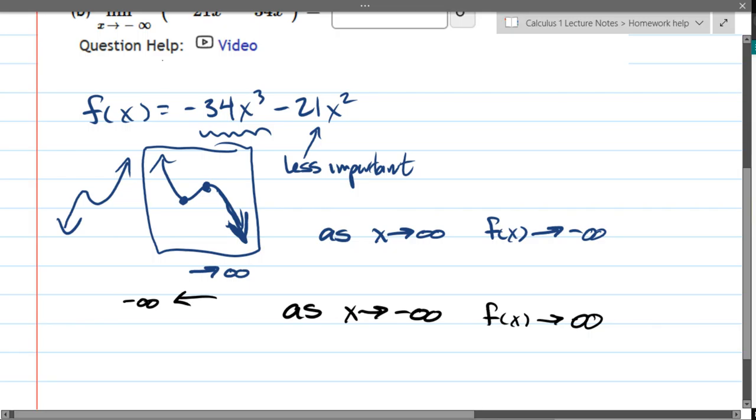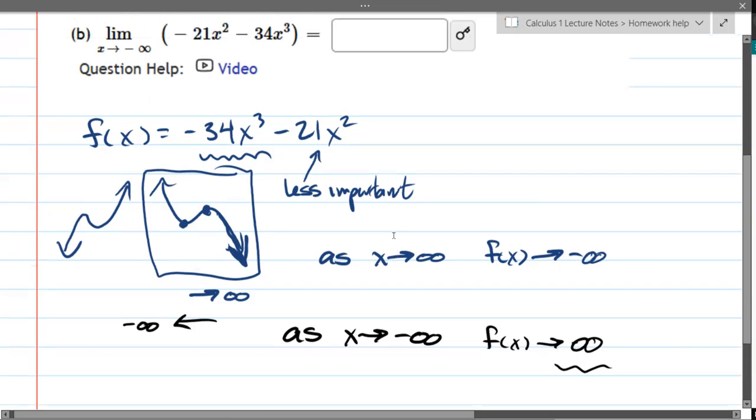You can also see that happen just by looking at the first term here. Now, we have negative infinity cubed. That's three negatives multiplied together, so it's still negative. So this negative infinity cubed is still negative infinity times another negative gives you positive infinity. So you can do it either way, but you're going to get positive infinity.